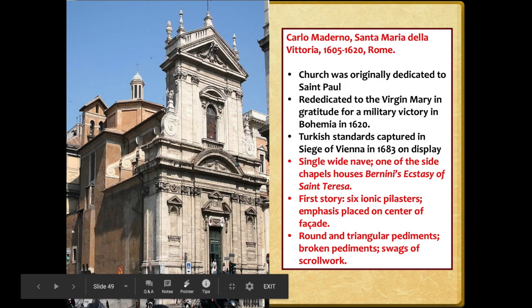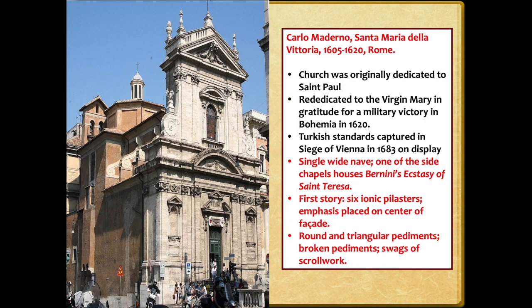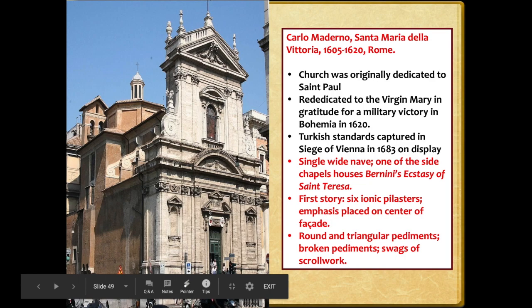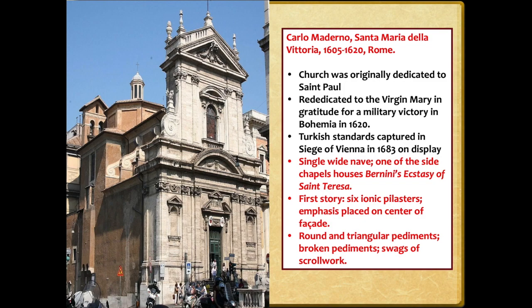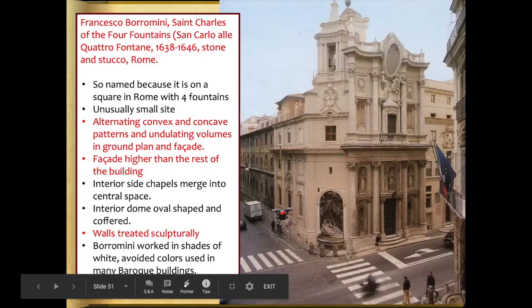The first story of Santa Maria della Vittoria features engaged columns — also called pilasters — in a decorative Ionic order. There are round and triangular pediments: a round pediment and a triangular pediment at the top, plus broken rounded and triangular pediments, and circular scrollwork throughout. It's an incorporation of classical elements with more decorative Mannerist elements, taken even further in the Baroque period. The interior features the Ecstasy of Saint Teresa in a chapel to the right.